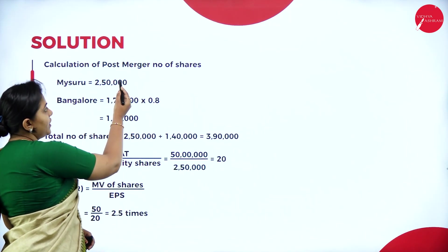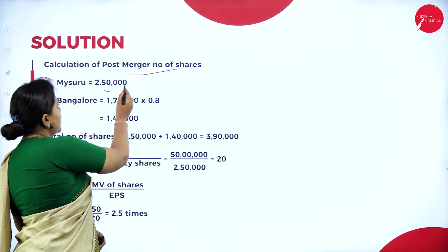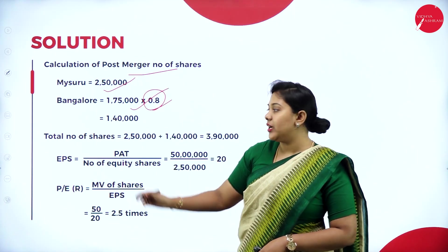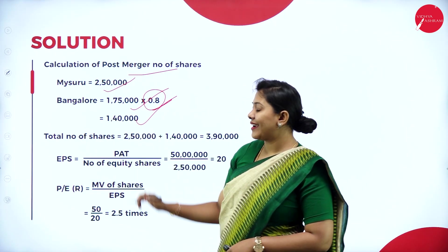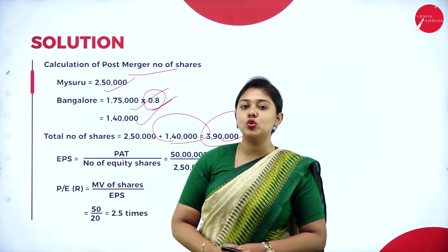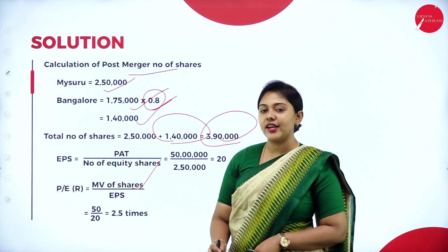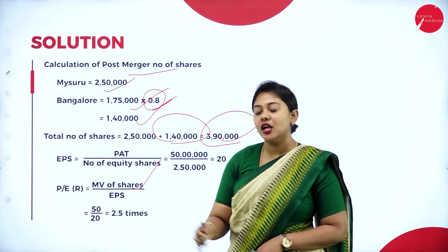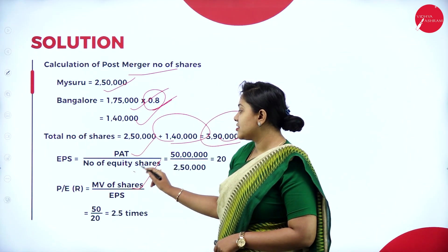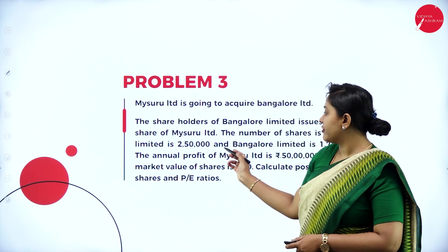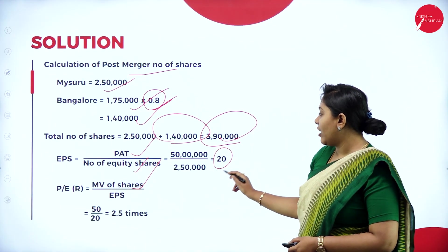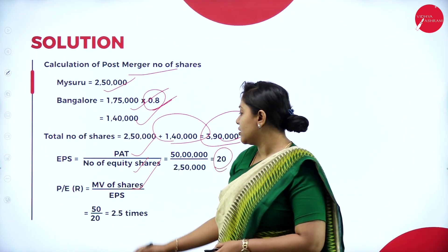Calculation of post-merger number of shares: Mysore Limited has 2,50,000 shares. Bangalore Limited has 1,75,000 shares issued at 0.8, which gives 1,40,000 shares. The total post-merger shares are 2,50,000 plus 1,40,000, which equals 3,90,000 shares. Now for price-to-earnings ratio: the formula is market price per share divided by EPS. EPS is not given, so we calculate it as profit after tax divided by number of equity shares. Profit after tax is 50 lakh divided by 2,50,000 shares equals 20. Substituting into the P/E formula, the answer is 2.5 times.